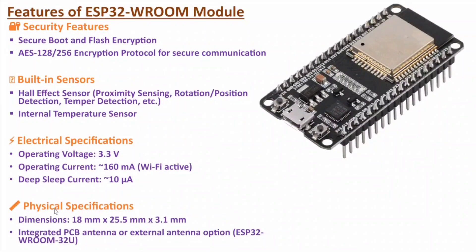Now let me discuss about physical specifications. The dimensions are 18 mm × 25.5 mm × 3.1 mm. It has an integrated PCB antenna, and one can also interface an external antenna with the ESP32 WROOM 32U variant. With the basic ESP32 WROOM, we don't have an external antenna option, but to interface an external antenna, one can prefer ESP32 WROOM 32U.